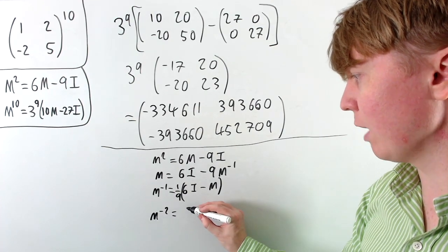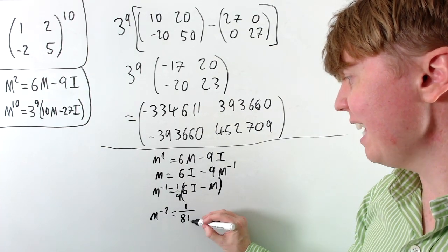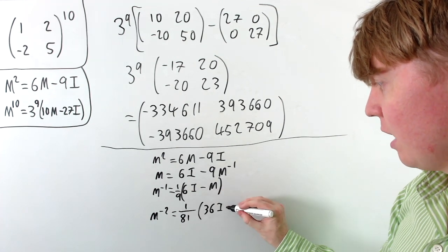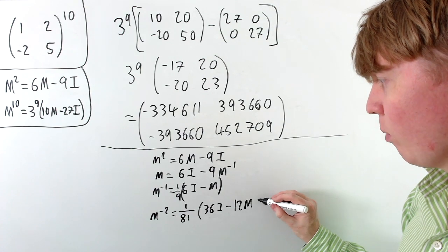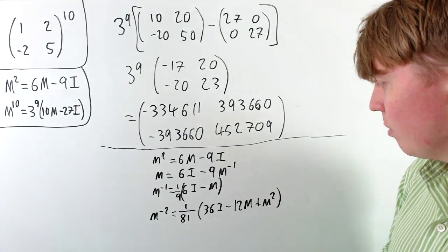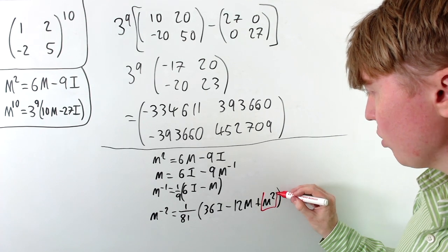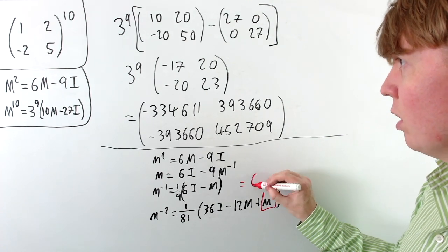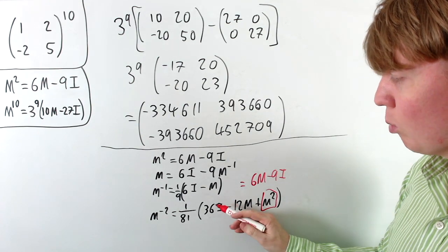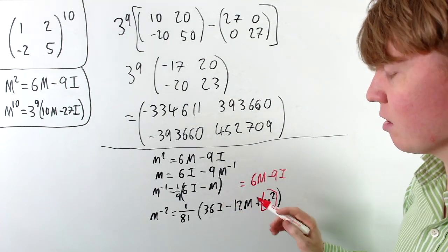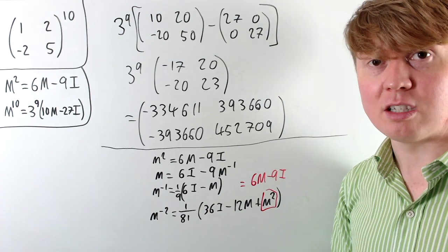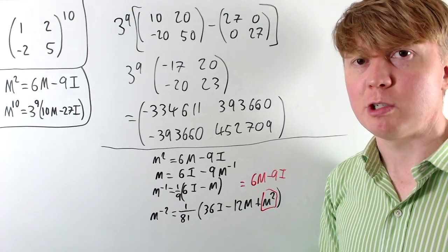We could go to M to the power of negative 2 by squaring everything: we'd get 1 over 81 times (36I minus 12M plus M squared). Just like before, we replace M squared with 6M minus 9I, keeping the expression in terms of I and M only. We could continue further into even larger negative powers.